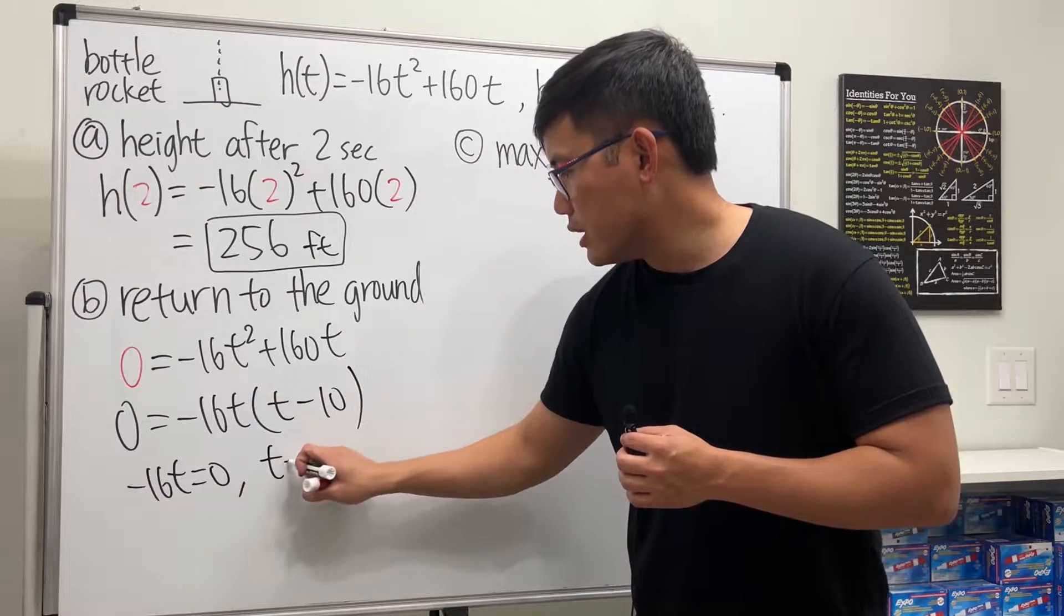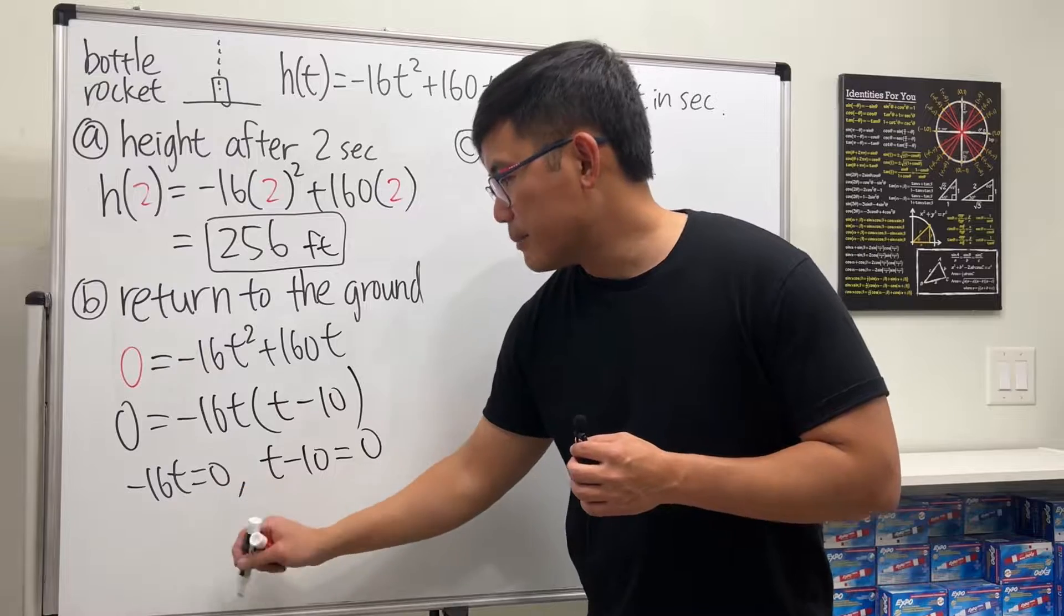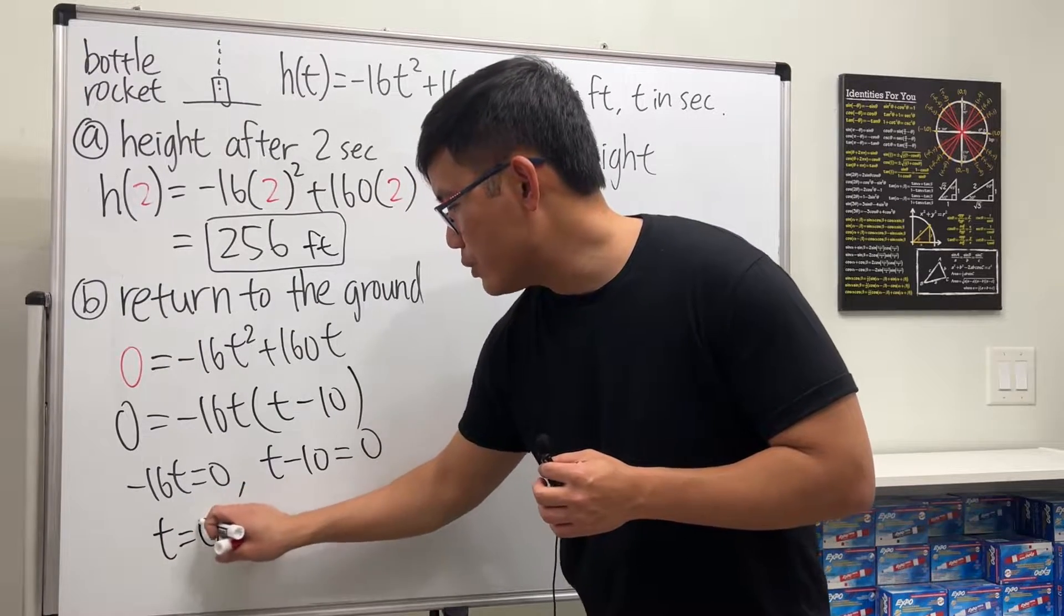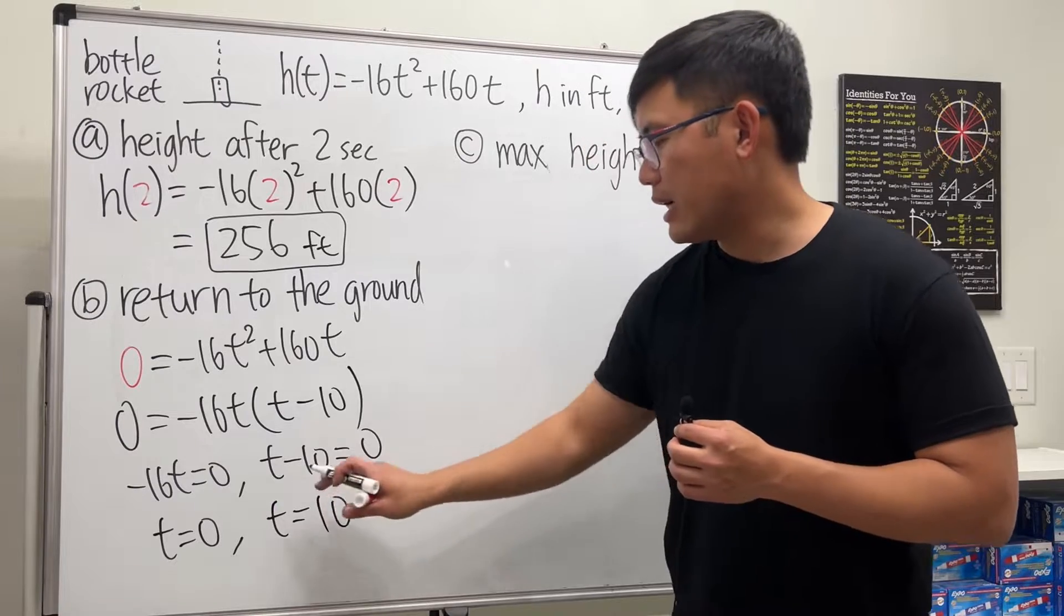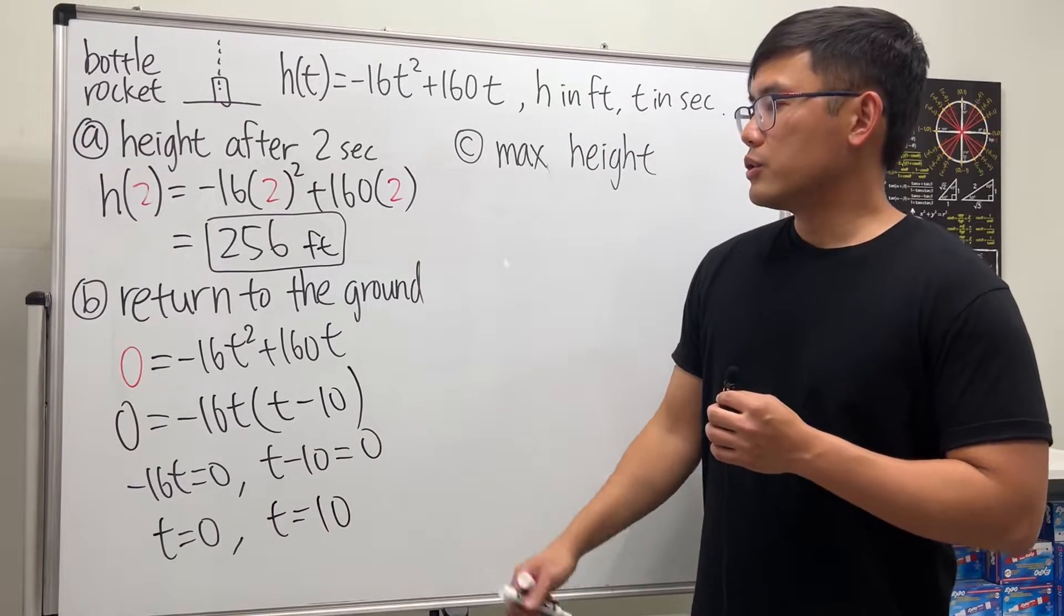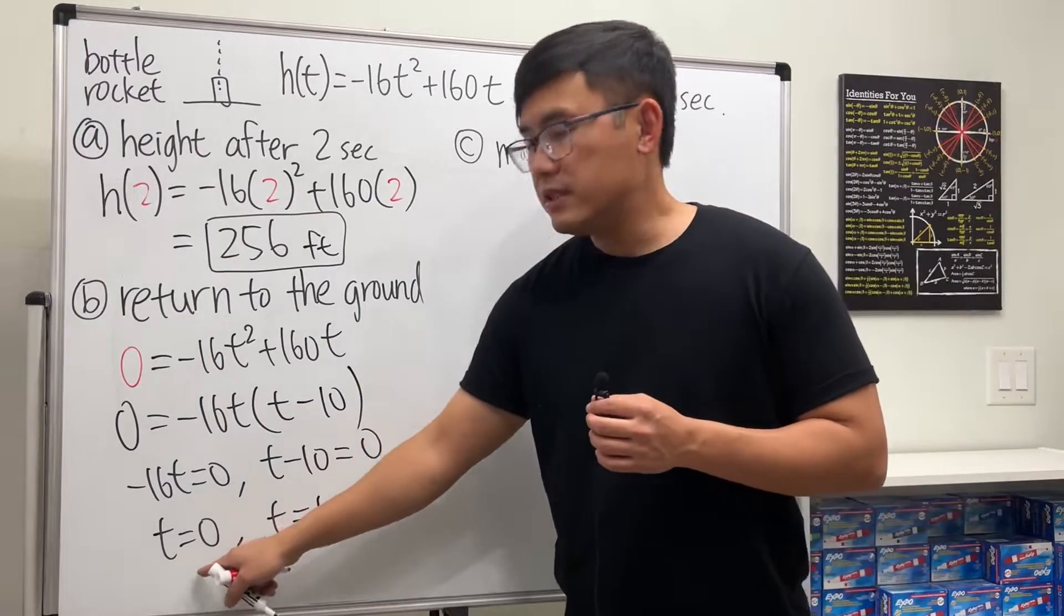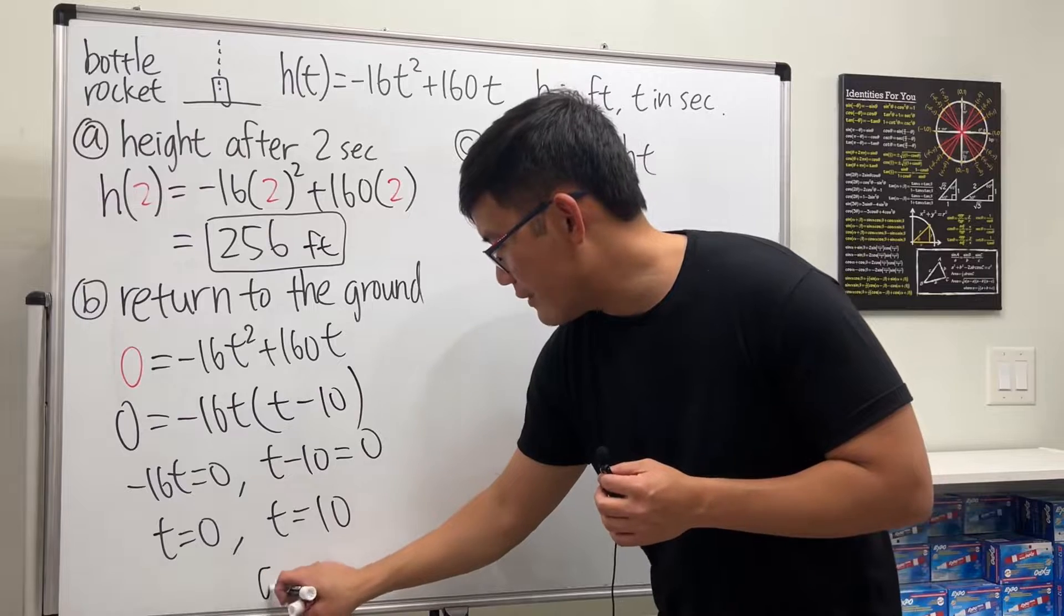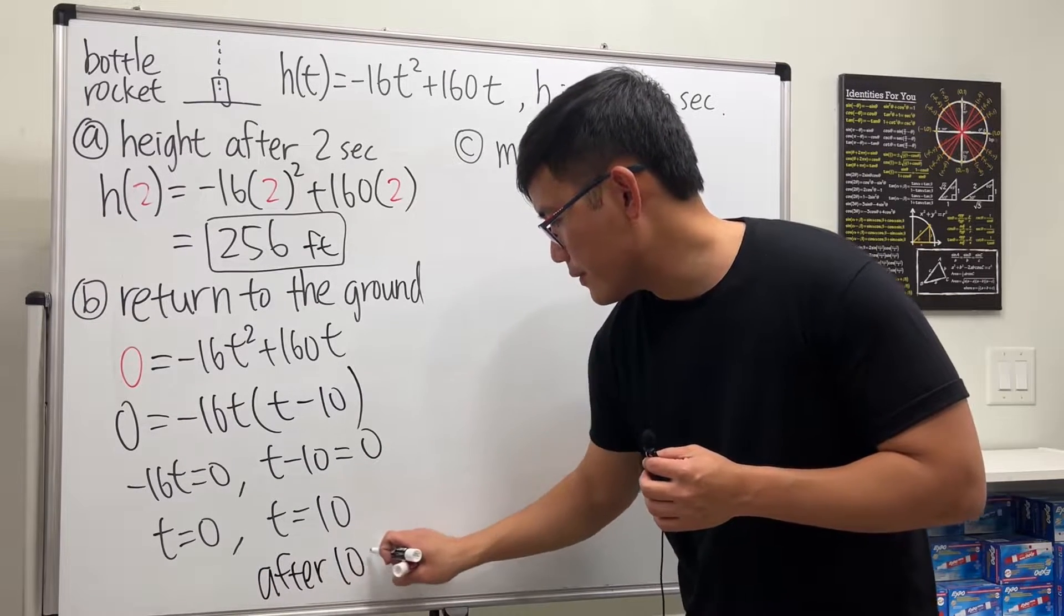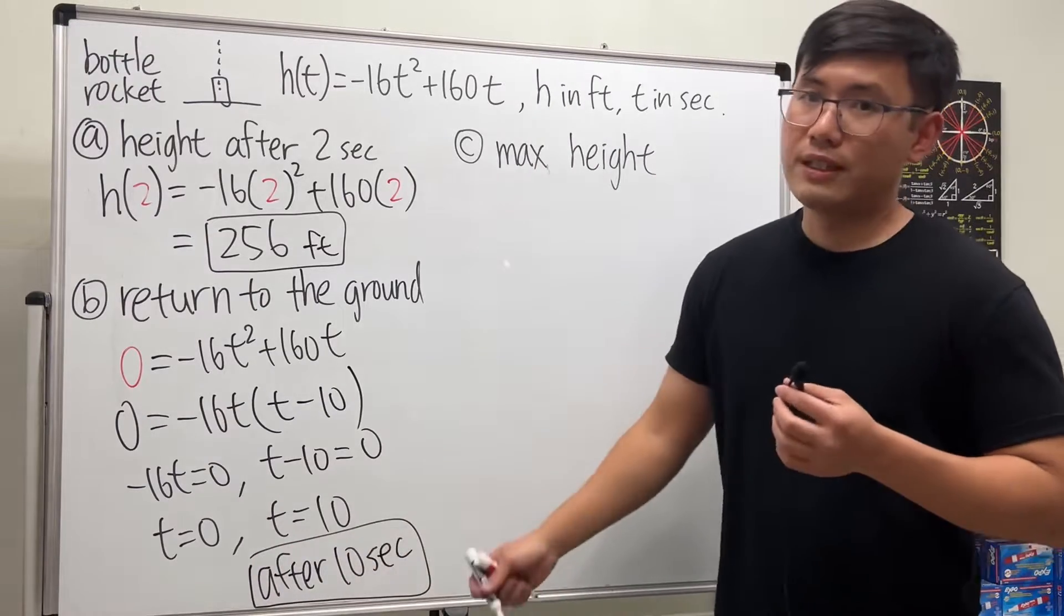We put -16t = 0 and t - 10 = 0. Dividing -16 on both sides gives t = 0. Adding 10 to both sides gives t = 10. When will the rocket return to the ground? When t equals zero, it was on the ground already, so the answer is after 10 seconds.